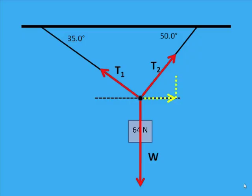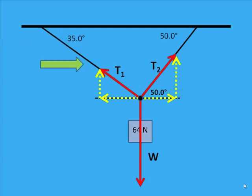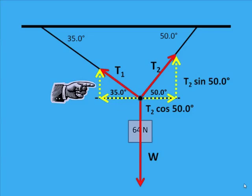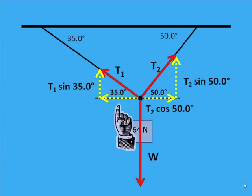Next, we break the vectors into components. You can see the yellow lines — these are the components. If this angle is 50 degrees, then this angle here is also 50 degrees. And if this angle is 35 degrees, then that angle in there is also 35 degrees. Now we can find the components. The vertical component of T2 is the opposite side, so it's T2 sine 50. The horizontal component would be T2 cosine 50 degrees. For T1, we have T1 sine 35 for the vertical, and T1 cosine 35 for the horizontal component.